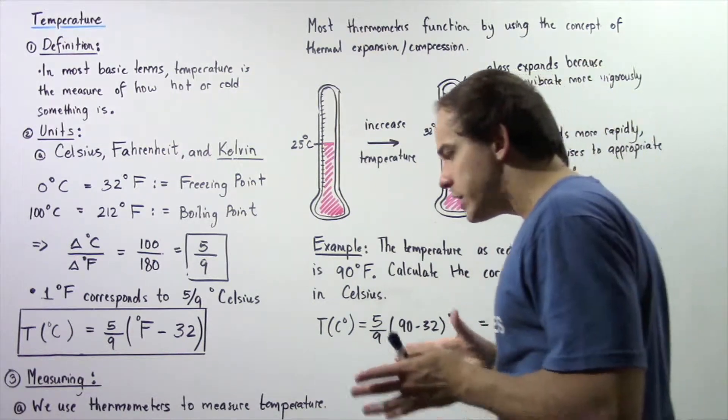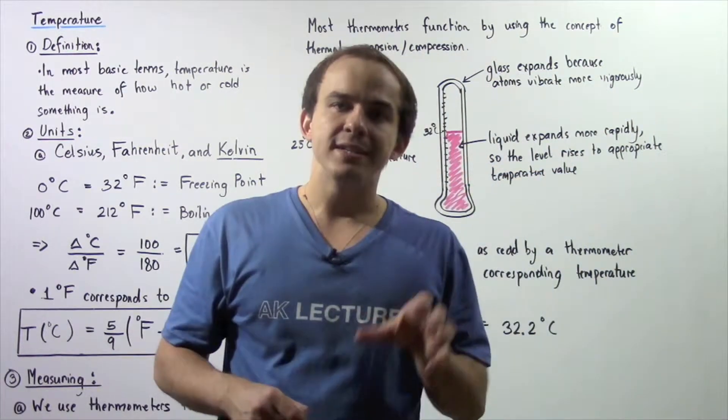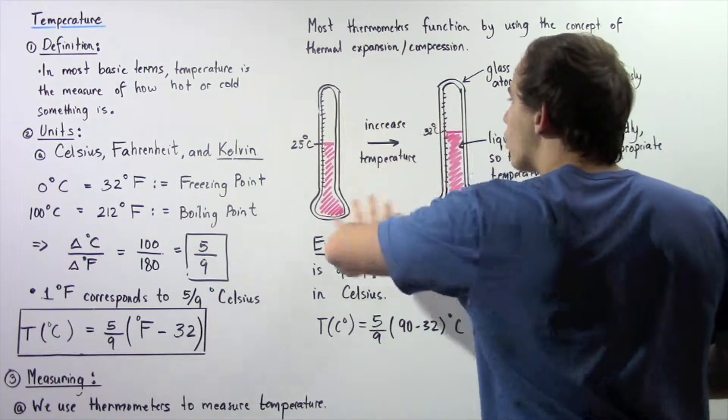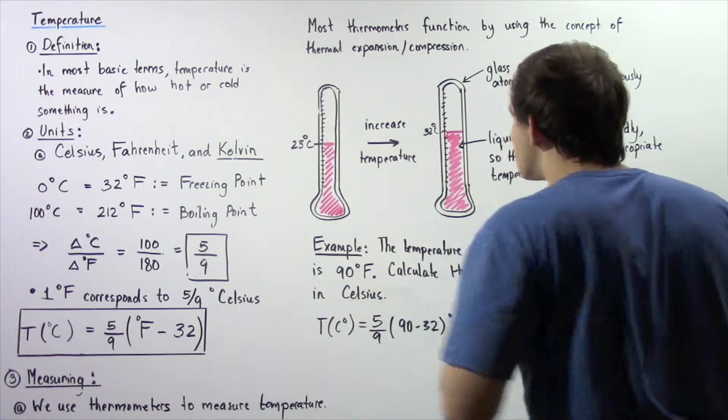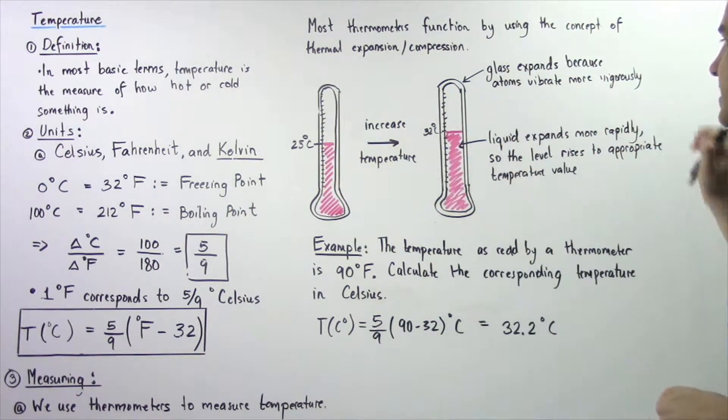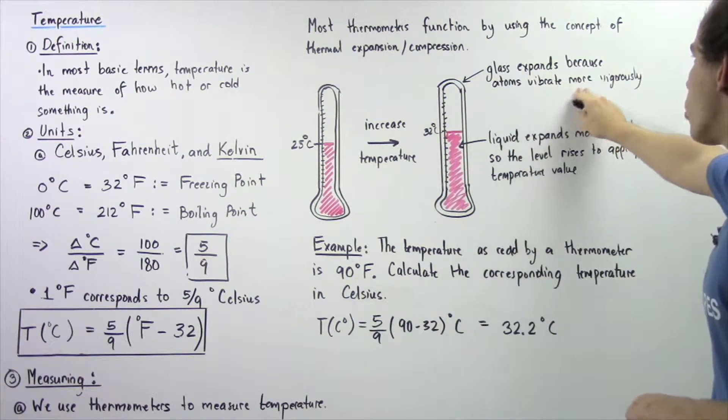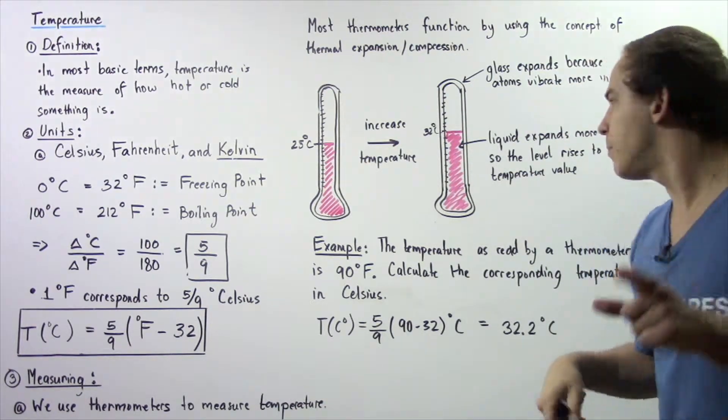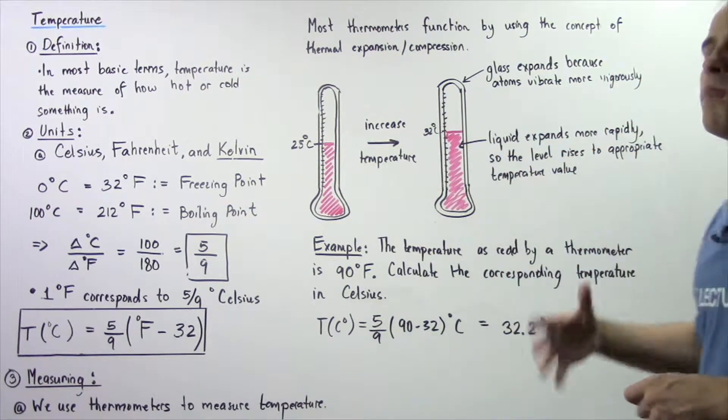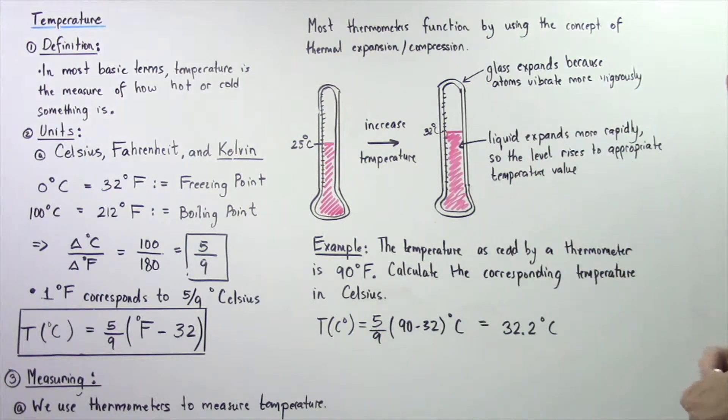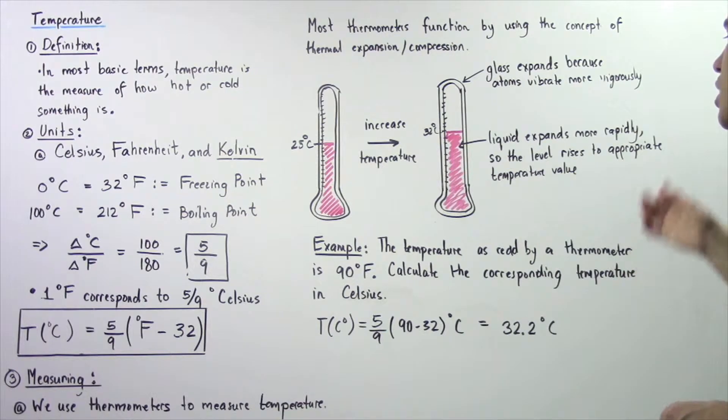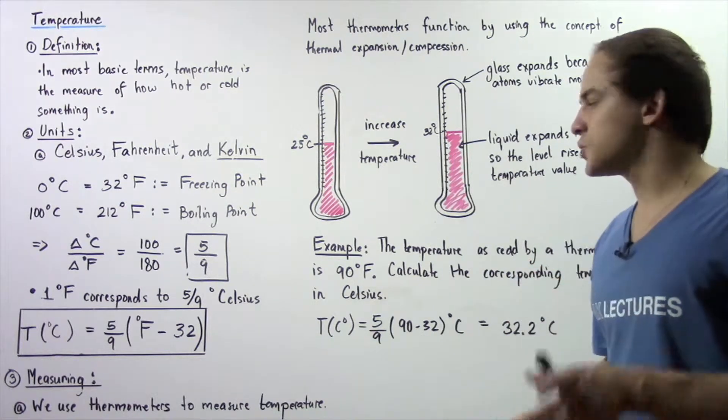It is commonly known that glass expands less rapidly than liquid. And that means when our temperature increases, our glass expands because the atoms vibrate more vigorously and the liquid also expands. But the liquid expands more rapidly than the glass, and so the level of this liquid rises to the appropriate temperature value.